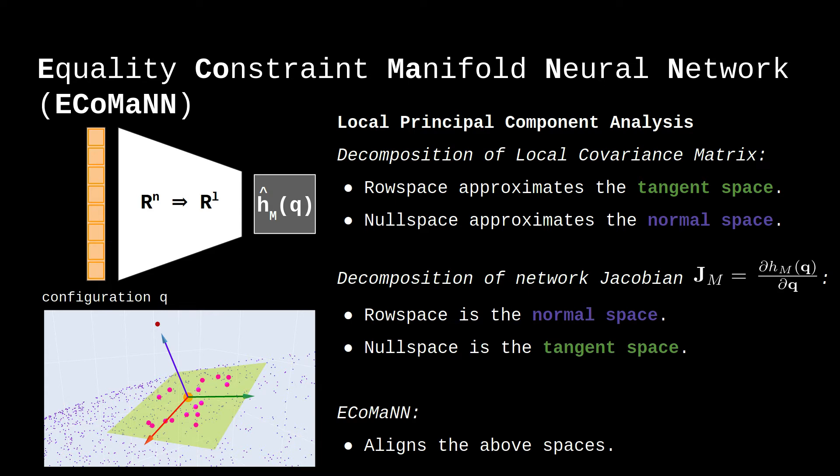During training, we use data points which are on manifold configurations, and additionally augment the dataset with data points that are slightly off-manifold using the eigenvectors found during local PCA.